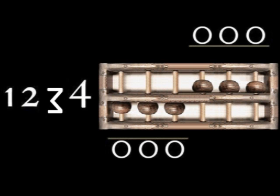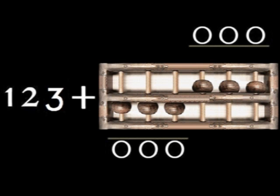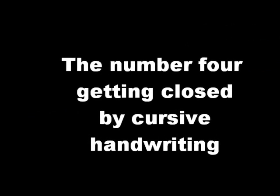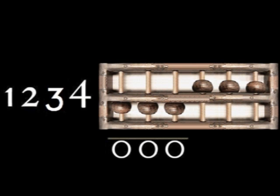The number 3 is composed of 3 angles. This is the handwriting of the number 3. The number 4 is composed of 4 angles. The number 4 getting closed by cursive handwriting. These are downstairs beads.